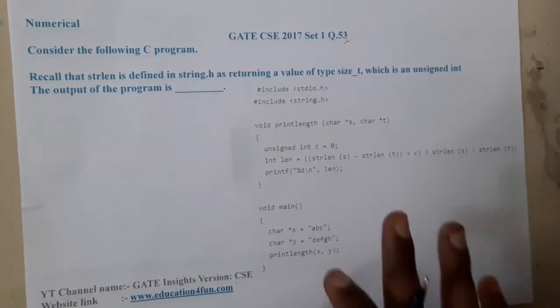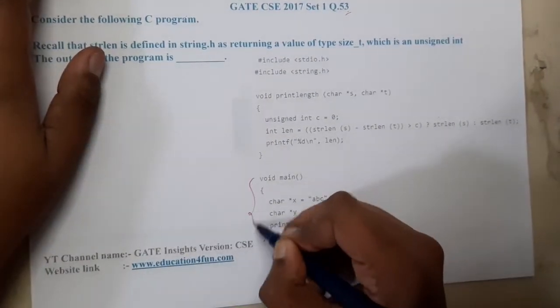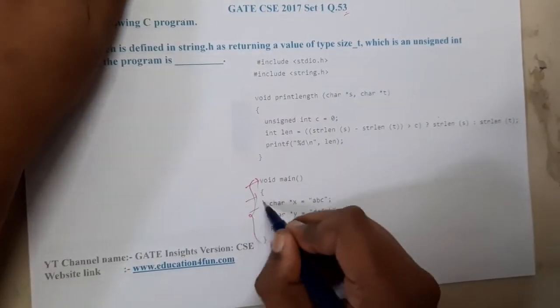Let us start. Where is our main function? Here is our main function. So this will be executed, this will be executed, this will be executed.